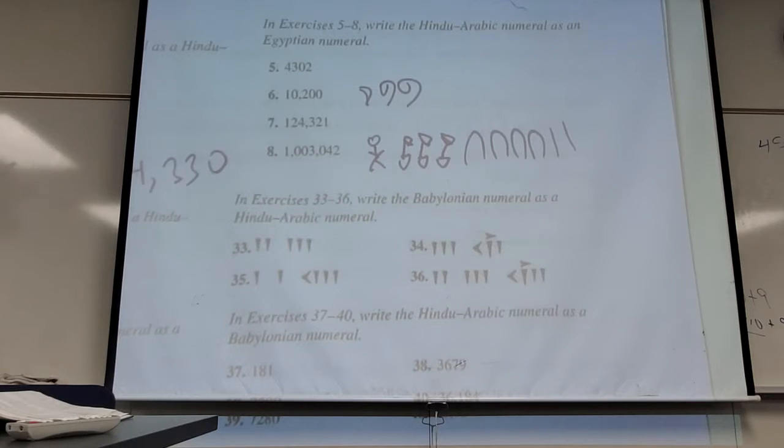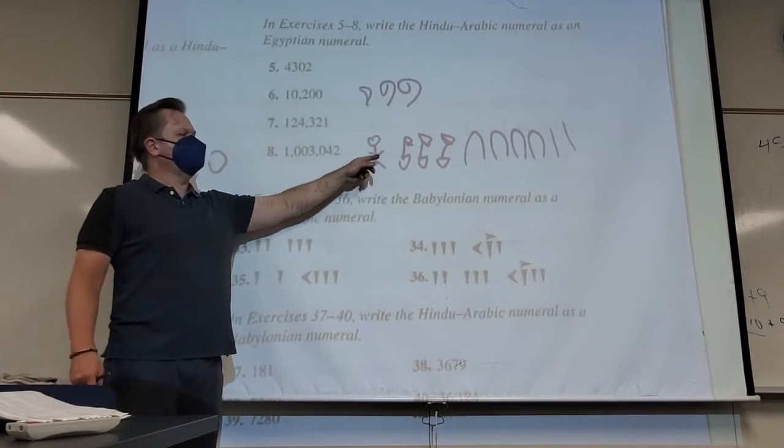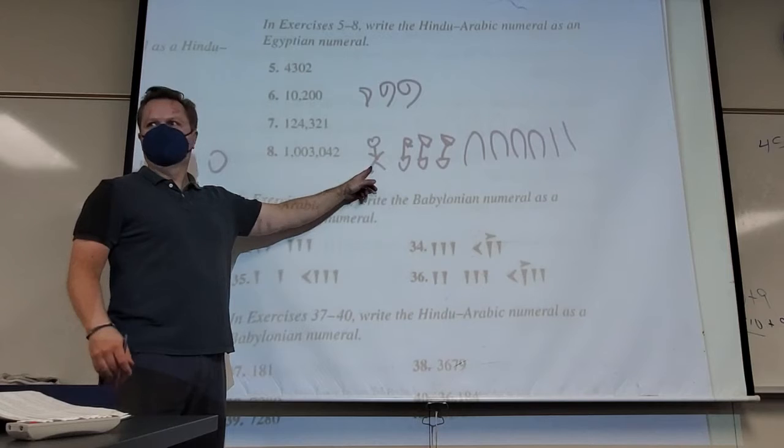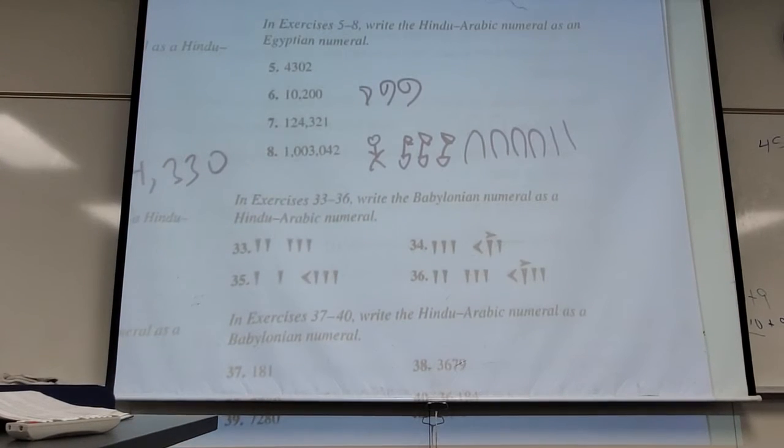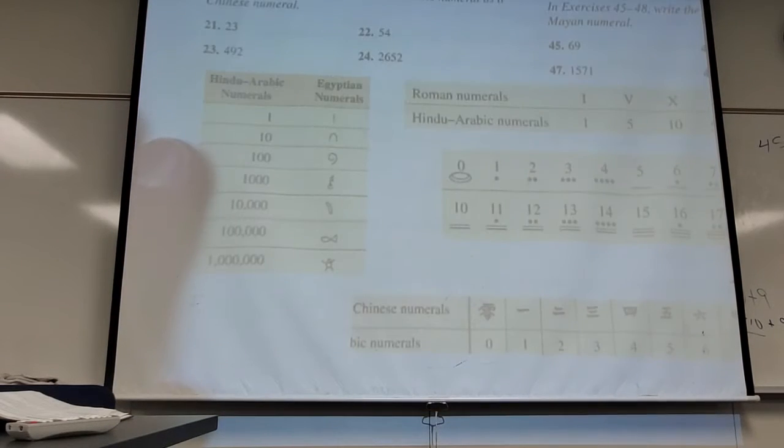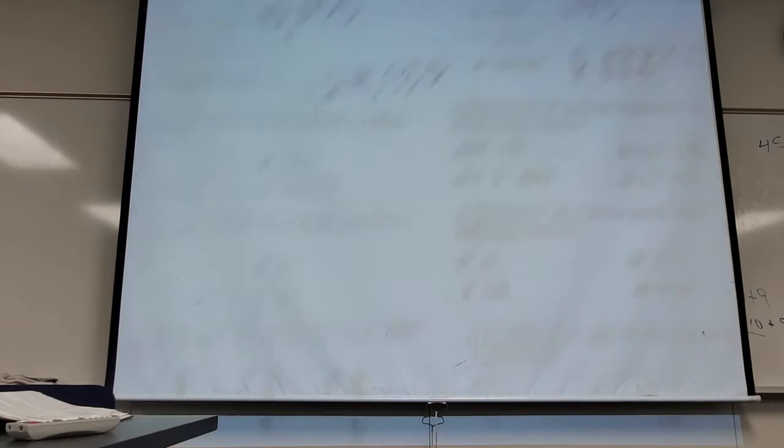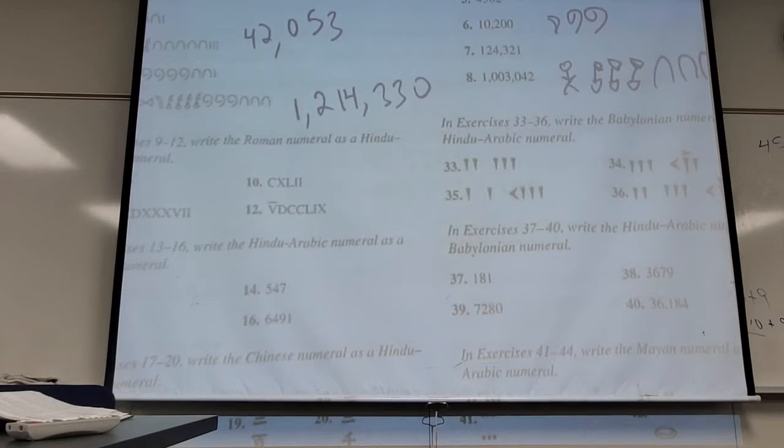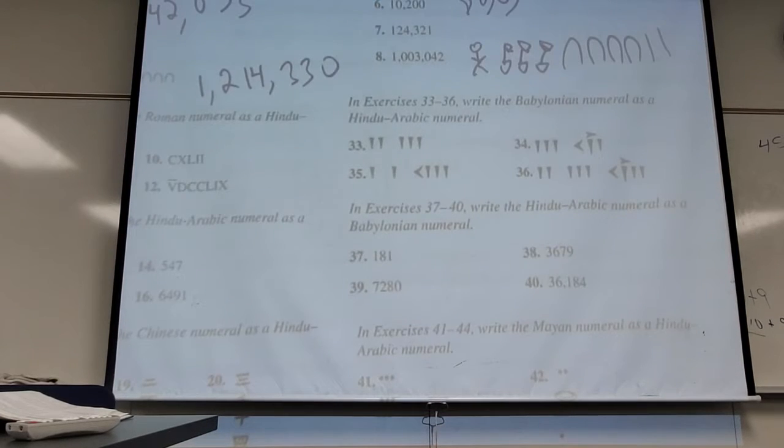And thankfully they are distinct enough that even if you draw worse than me, which if you do, I'm very sorry, I could still probably distinguish what that is. The Egyptian system is really interesting. It's nothing like ours, really. Right? Different symbols to represent the numerals. There's no reason in the world that we couldn't use a little stick man to mean something.